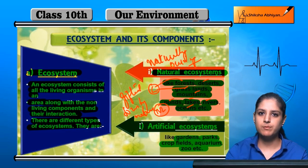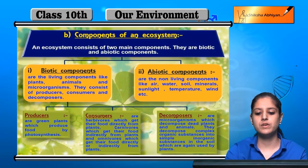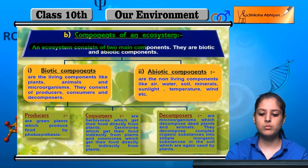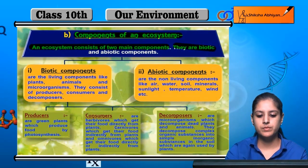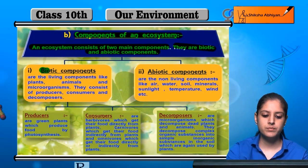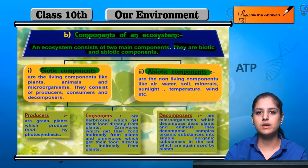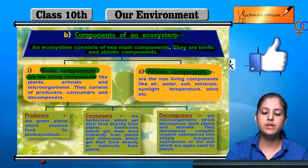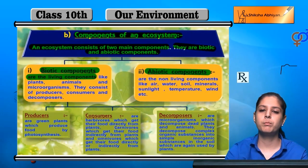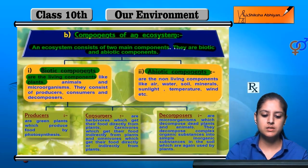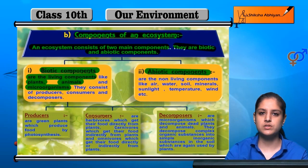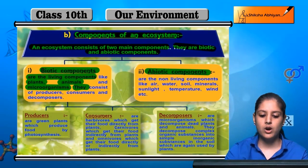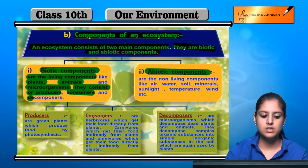Now we will see what are the components of the ecosystem. An ecosystem mainly contains two components: biotic and abiotic. Biotic components mean all the living components — all living beings, such as plants, animals, microorganisms, etc. Biotic components are further divided into producers, consumers, and decomposers.